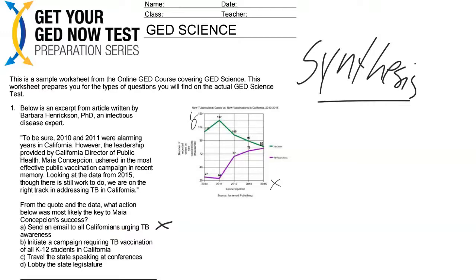Option B: initiate a campaign requiring TB vaccination of all K through 12 students in California. On the chart, we certainly see that TB vaccinations were going up, so let's mark that one as a possibility. Option C: travel the state speaking at conferences — would that really be the key to success? Judging by the data, we're seeing that as vaccinations went up, TB cases went down, so we'll take that one out. And lobbying the state legislature — take that one out too.